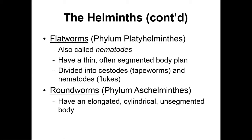We also have roundworms, phylum Nematoda. This phylum of helminth has very elongated cylindrical unsegmented body plans. We can think of these — the roundworm category — as your traditional worm in that it doesn't have that segmented body plan, whereas the flatworms will have segmented body plans.